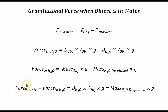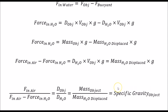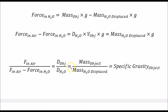If we subtract the two forces — the force in air and the force in water — the mass of the object cancels out, and we're left with the density times volume of the water times g, which is the mass of the water displaced times g. Since volume and g are the same for both, the masses and densities are proportional. Taking the ratio of the force in air to the difference between the force in air and the force in water gives us the ratio of the densities — the specific gravity.